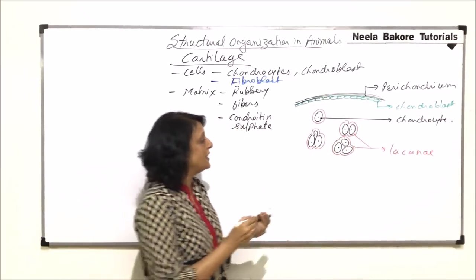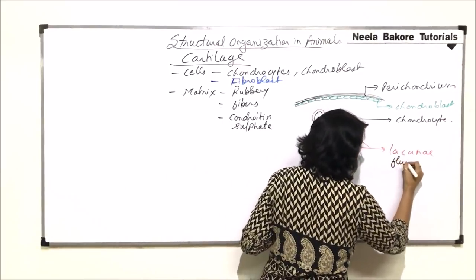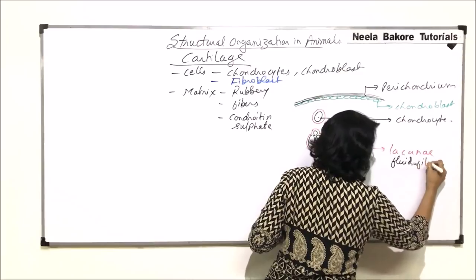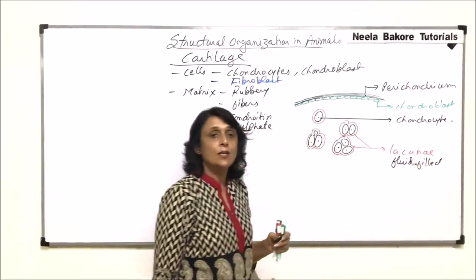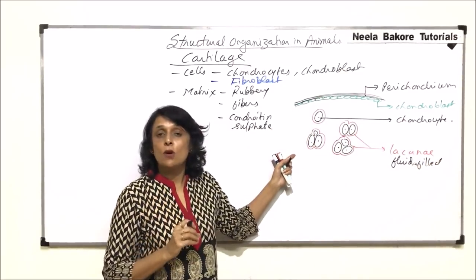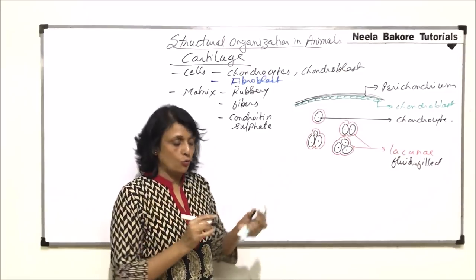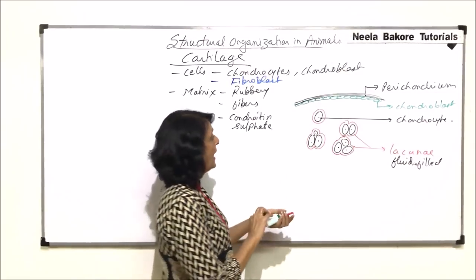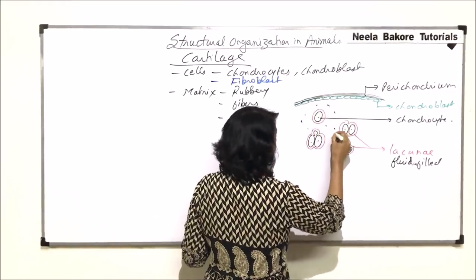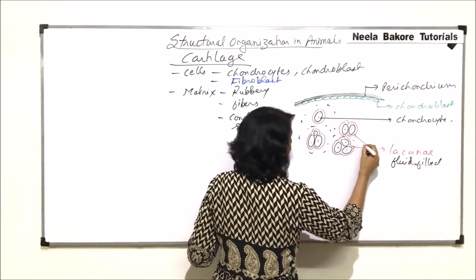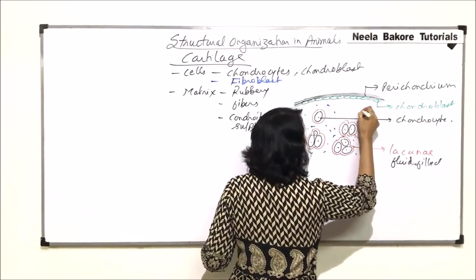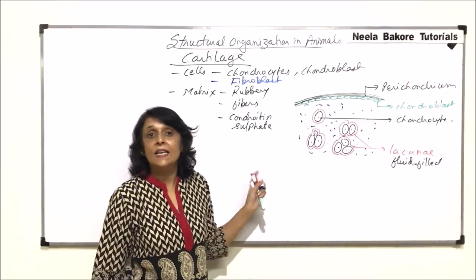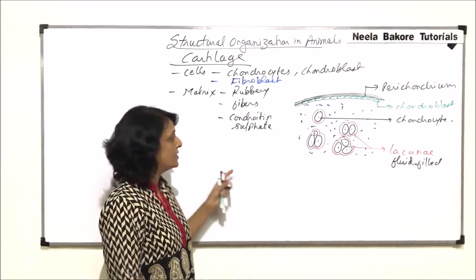This space is known as lacuna. All these chondrocytes are placed in this fluid-filled cavity which is lacuna. Normally these chondrocytes are present in groups but can be single also. Here is all the matrix. Sometimes the matrix is clear without any fiber, glass-like, that is seen in case of hyaline cartilage.